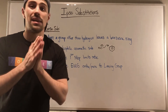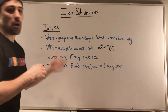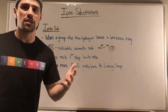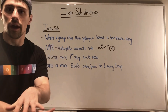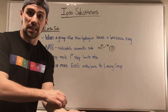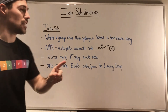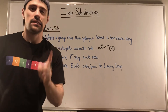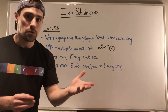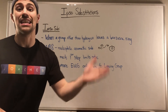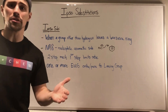So, the Ipso Substitution — what is it? I have some bullet points here; if you don't get this the first time around, that's fine, but I wanted to write these down so you can have them for reference later. An Ipso Substitution is when a group other than a hydrogen leaves a benzene ring. And of course, if something's leaving, you have a pretty strong bet that it's because something is attacking.